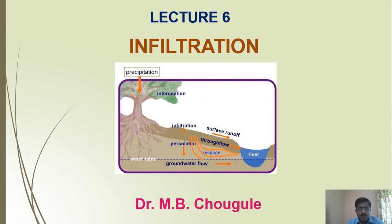When precipitation takes place, some water runs on the ground as surface runoff, and some water enters into the ground, which we call infiltration. There is one more term associated with this, which is percolation. We are going to see the difference between infiltration and percolation.